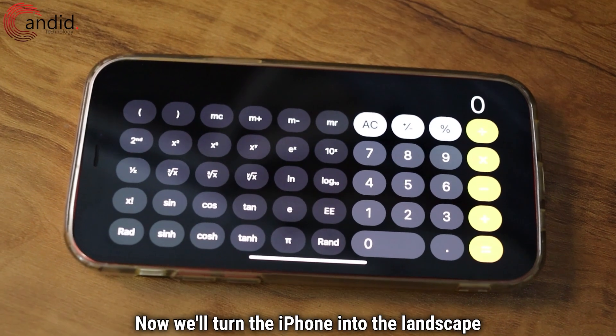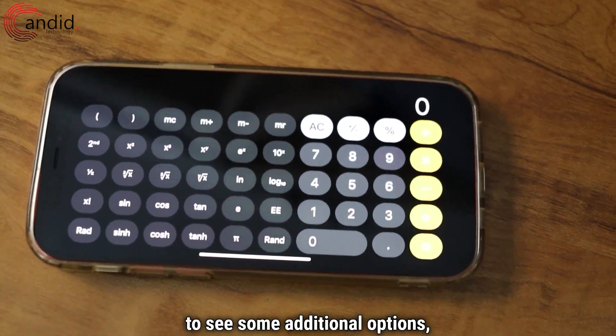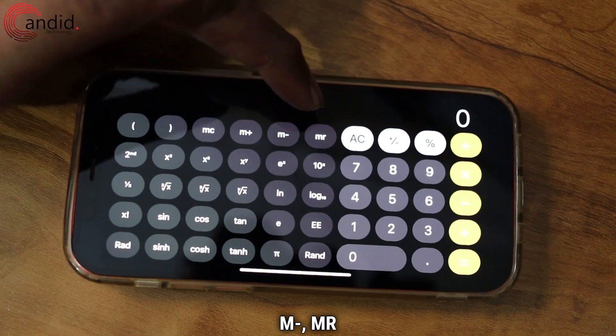Now we will turn the iPhone into the landscape mode to see some additional options, which is MC, M plus, M minus, MR.